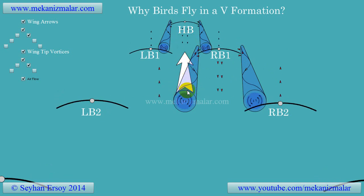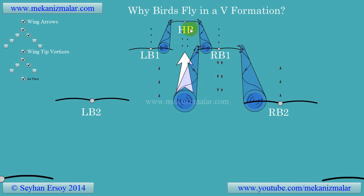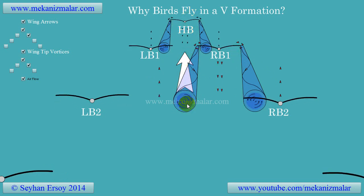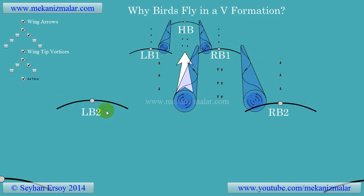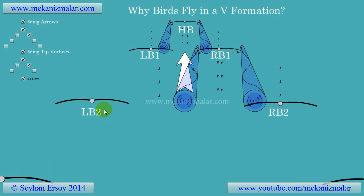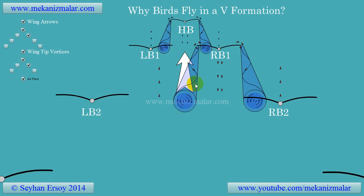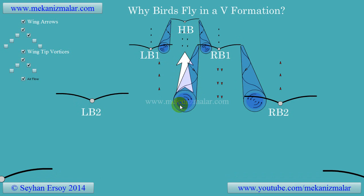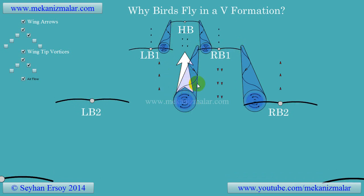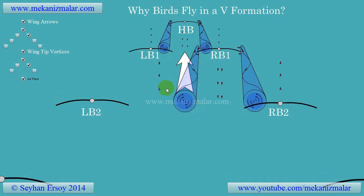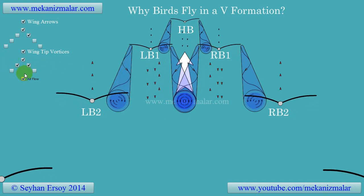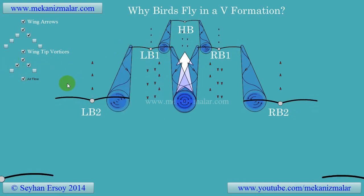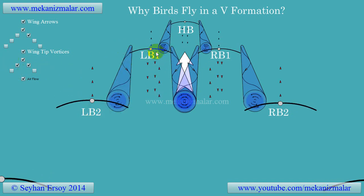The left side of RB1 has an updraft region, but it also has a downdraft due to the lead bird HB. The two opposite effects created by HB and RB1 diminish each other and create choppy airflow in that region. The same thing can be said for LB2 following bird LB1.